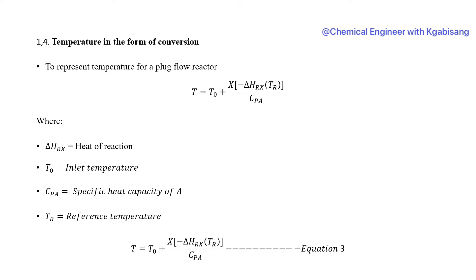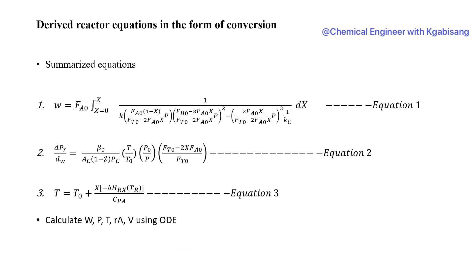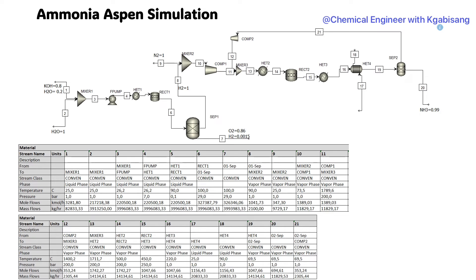Because our reactor is adiabatic, the change in temperature cannot be neglected — it won't remain constant as it would in an isothermal case. We therefore include the temperature equation, which accounts for inlet temperature, heat of reaction, specific heat capacity of species A, and the reference temperature. This is Equation 3. We have now derived catalytic weight in terms of conversion, pressure drop in terms of conversion, and temperature change in terms of conversion. All the information we need can be obtained from Stream Number 14.